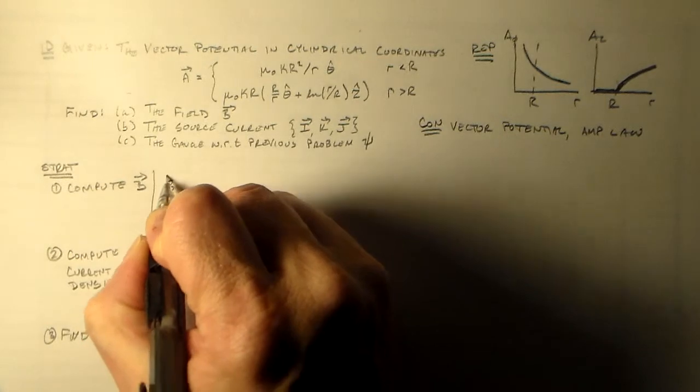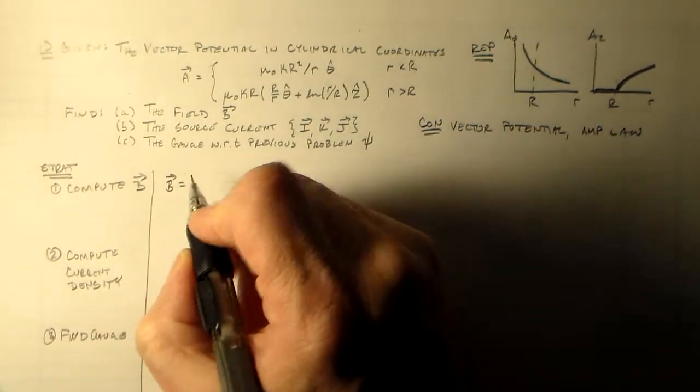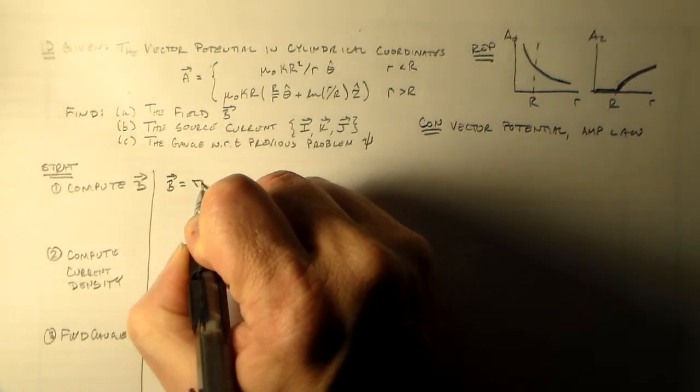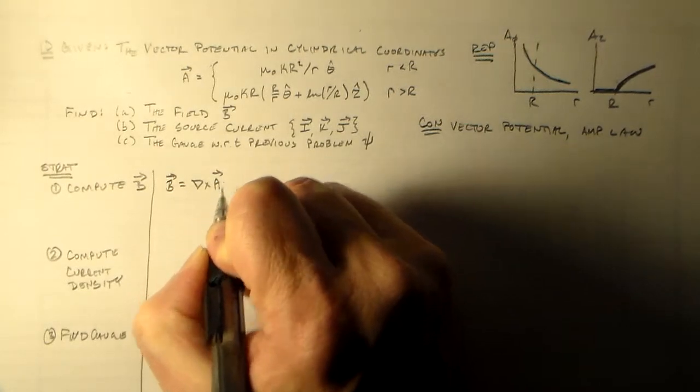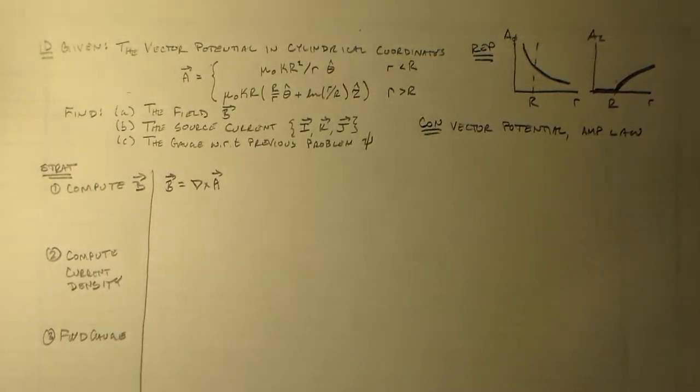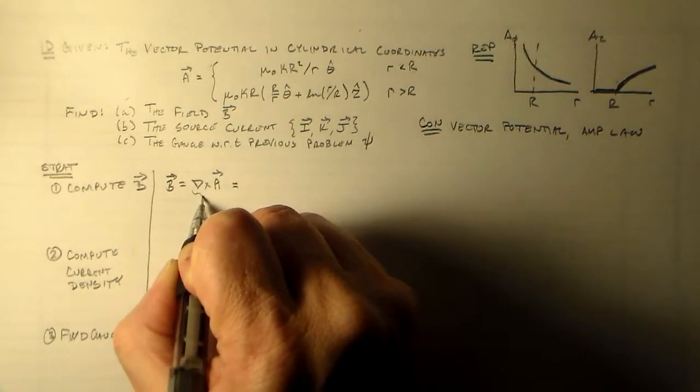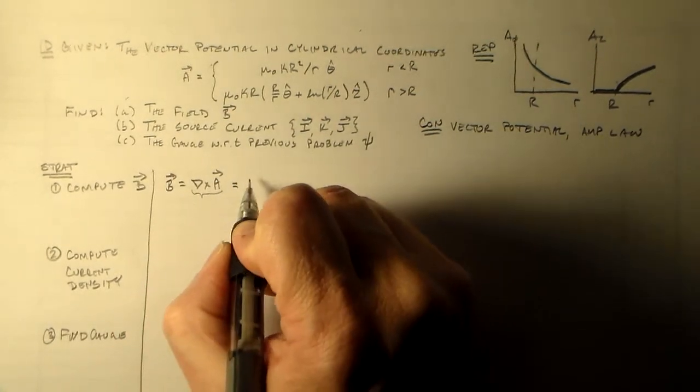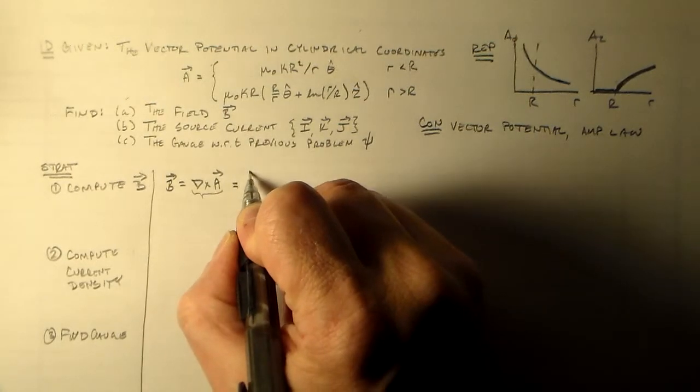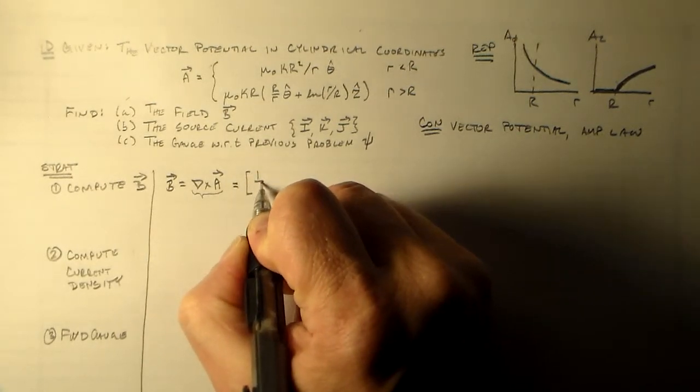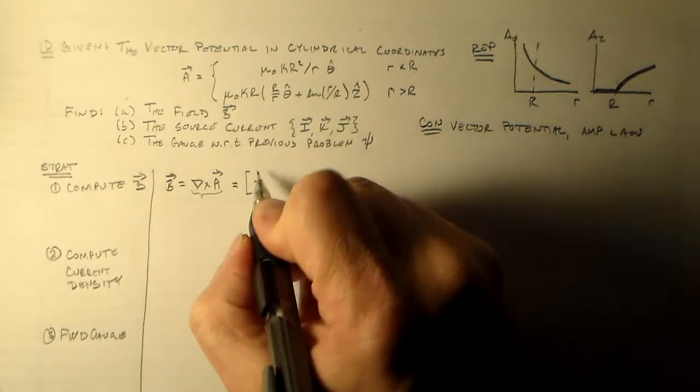The simplest here is that B equals del cross A. If we do the curl and expand it out, it looks kind of like this. You can find this in the back of your book.